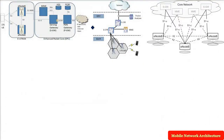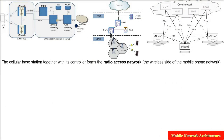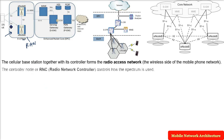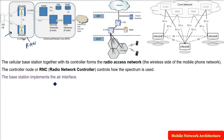This picture shows different parts. The cellular base station along with all the controllers forms the RAN — Radio Access Network. You can also say this is the wireless side of the mobile phone network. The controller node, or RNC (Radio Network Controller), controls how different spectrums are used.